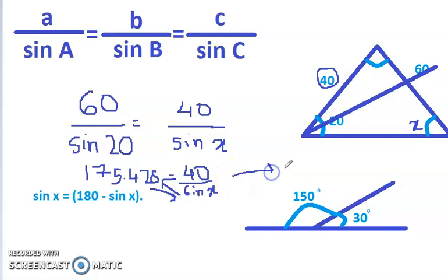40 upon 175.428 gives me 0.228, which means that sine X equals 0.228. Now in order to find X, what I must do is, if sine X is equal to this, then X is equal to sin inverse of 0.228. That's sin inverse of the answer, and that's 13.18. So X happens to be 13.18 degrees. So this is how I use the sine rule to find this answer for the angle X.